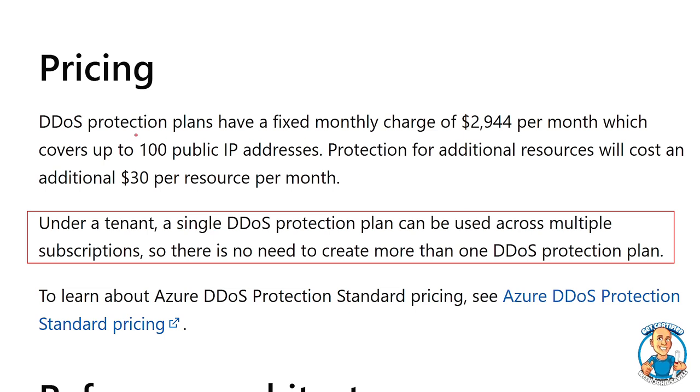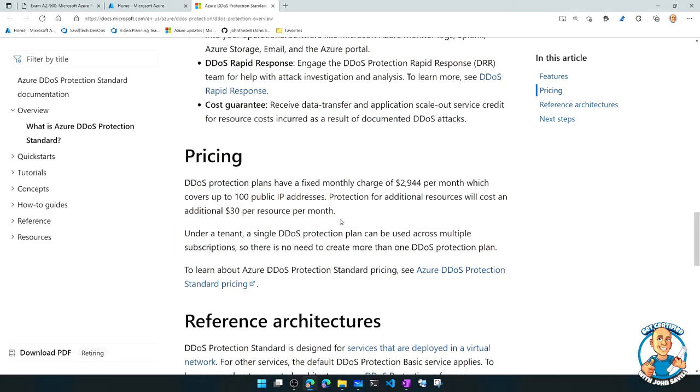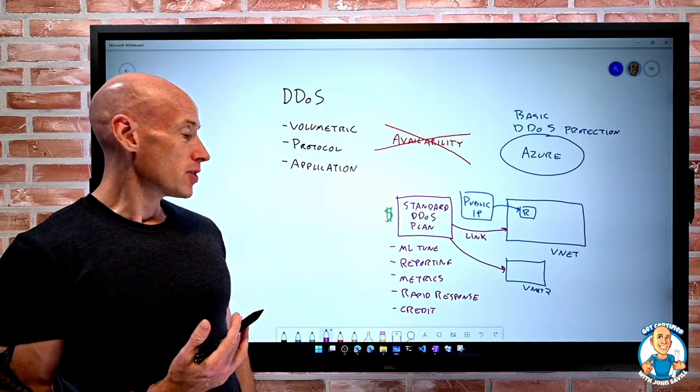Now, it does cover up to 100 public IPs, and then there's an additional cost for resources beyond that 100. So this is the goal of this distributed denial of service protection.